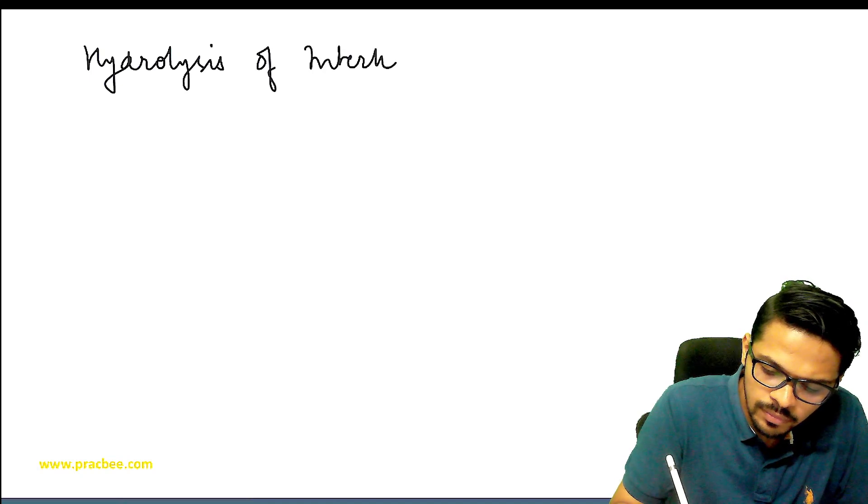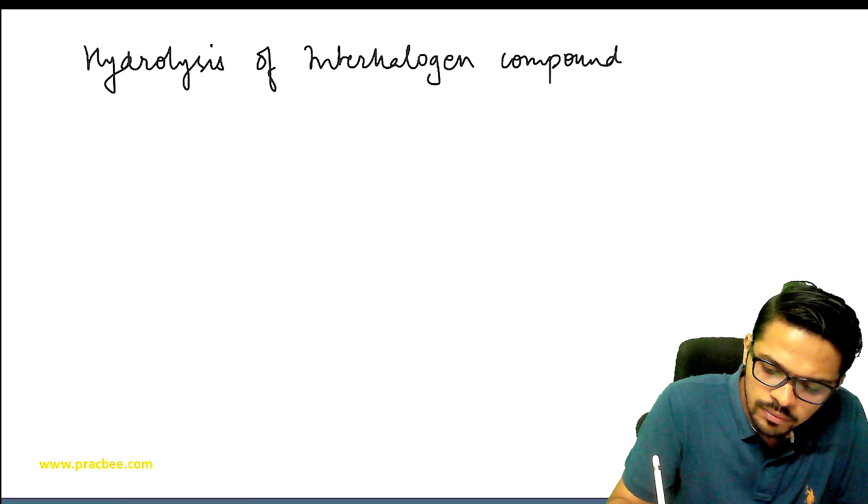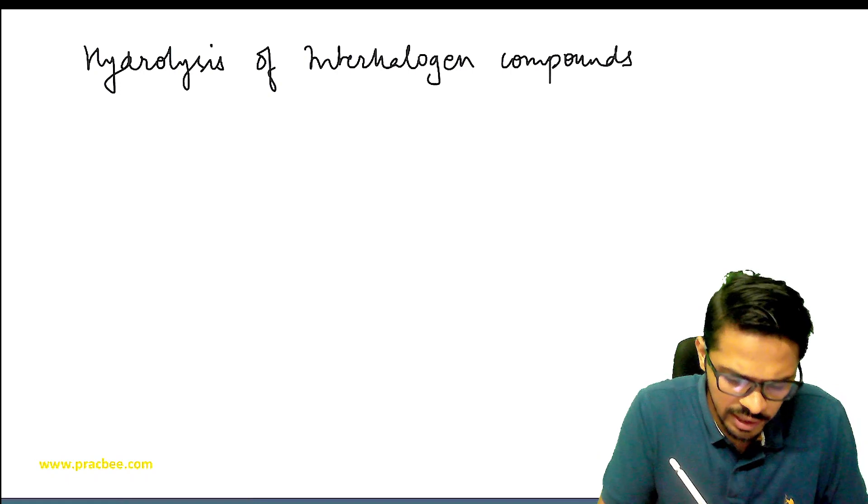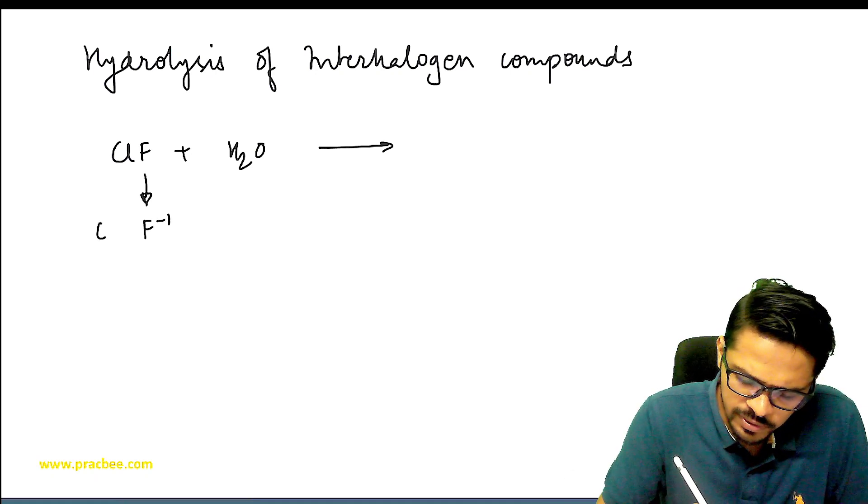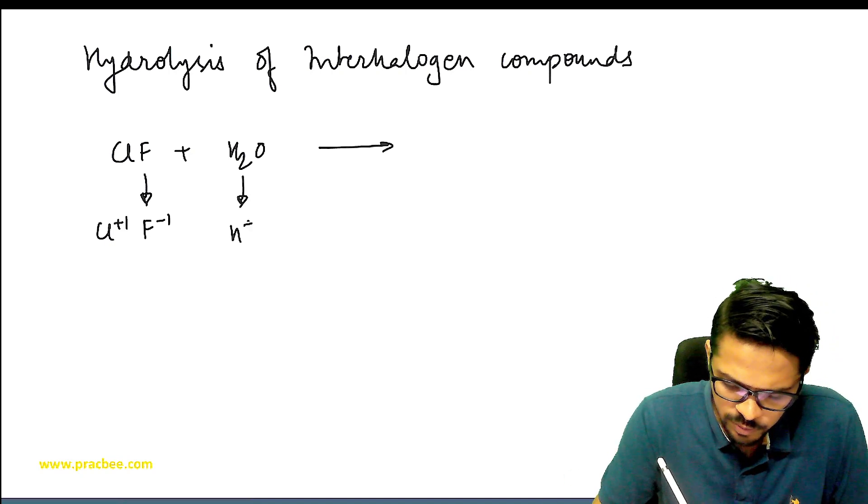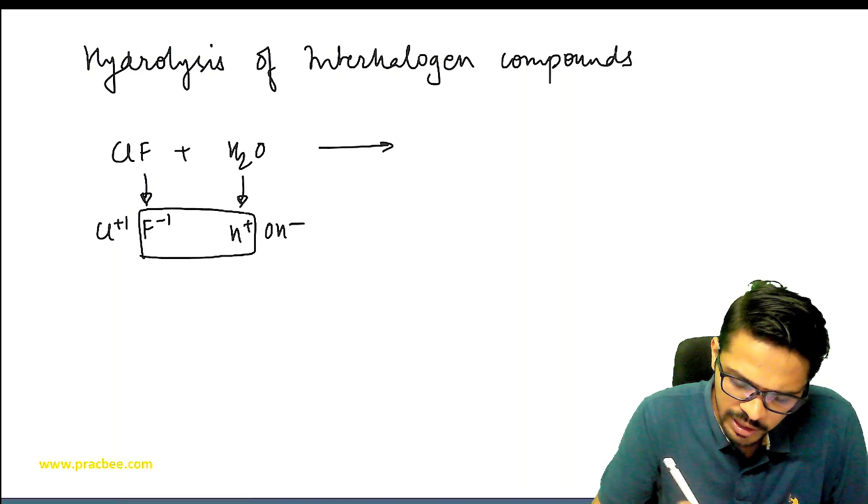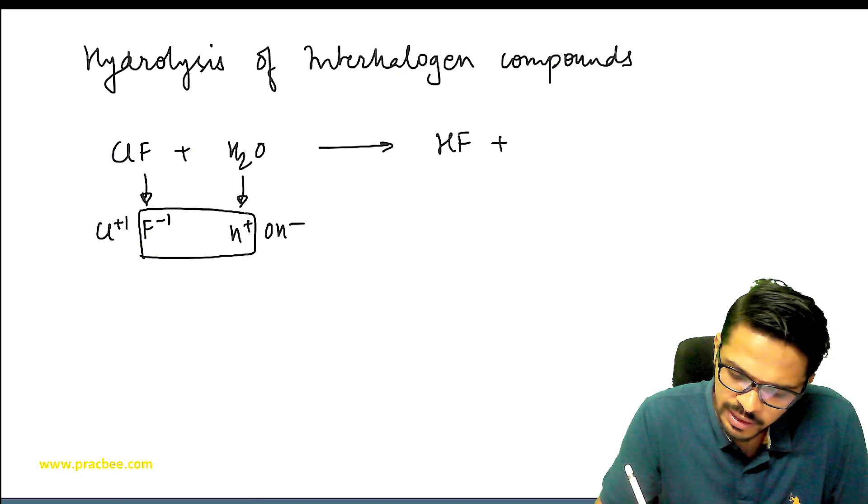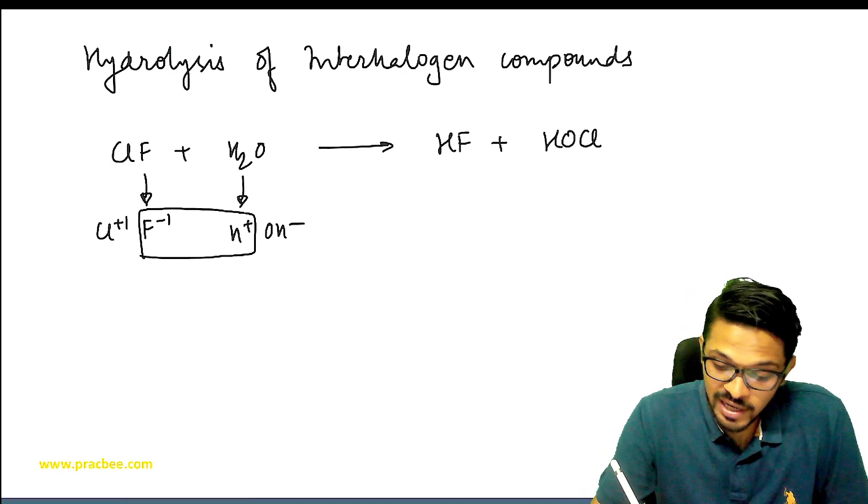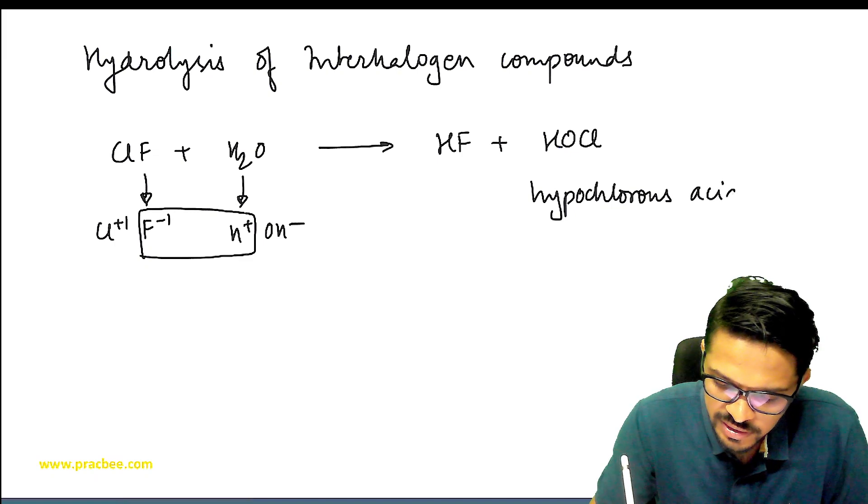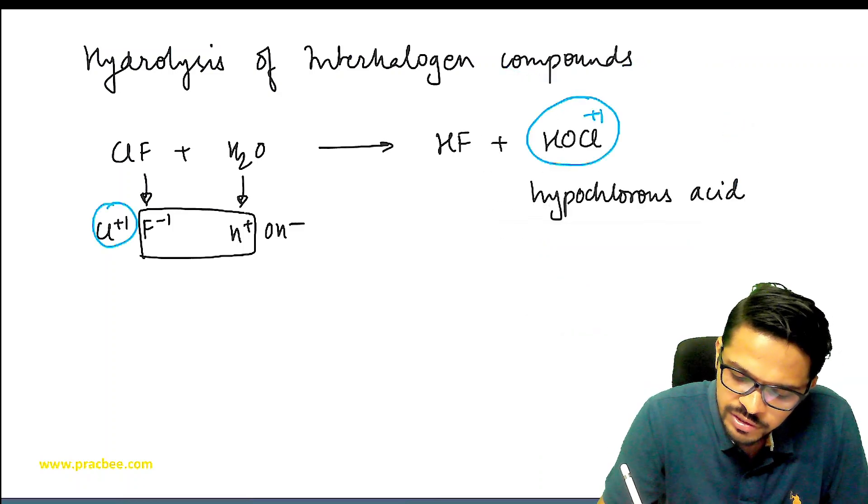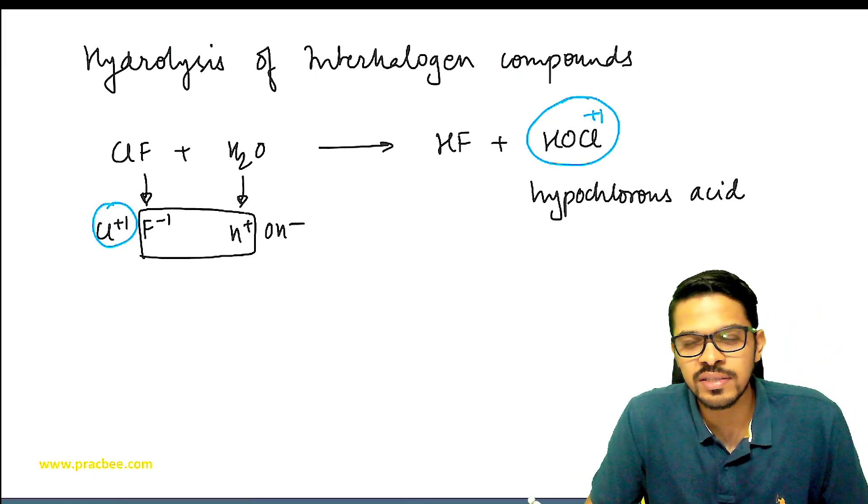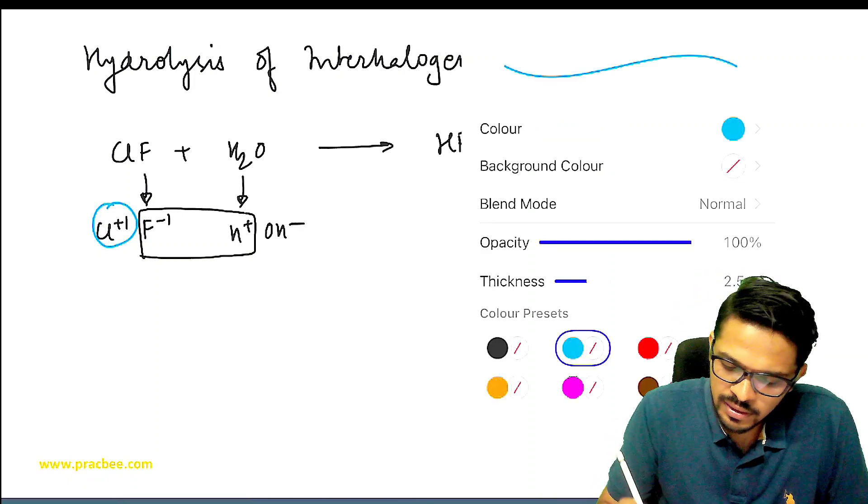Next, let's talk about hydrolysis of interhalogen compounds. We take the smallest interhalogen compound, which is ClF. If you do the reaction of ClF with water, think carefully: on fluorine the charge is -1, on chlorine the charge is +1. Water has H+ and OH-. So these will combine and we will get HF and HOCl. HOCl is called hypochlorous acid. One important point to understand is that the oxidation state in reactant should remain the same in product. Basically we need to make an oxy acid whose oxidation state is same as that of reactant.